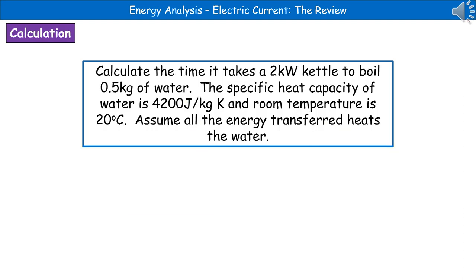The kind of calculation question they could ask you is: calculate the time it takes for a 2 kilowatt kettle to boil 0.5 kilograms of water. The specific heat capacity of water is 4200 joules per kilogram Kelvin, and room temperature is 20 degrees Celsius. Assume all the energy transferred heats the water.